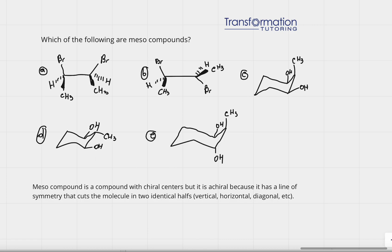Let's look at our molecules and see if they're meso compounds or not. For molecule A, we first have to identify whether it has any chiral centers. A chiral center is a carbon connected to four different groups. In A, we have a carbon connected to bromine, hydrogen, a CH3 methyl group, and a carbon that has a bromine and CH3 — all different, so this is a chiral center.